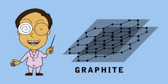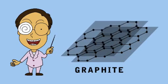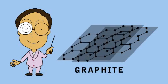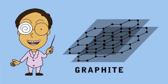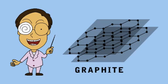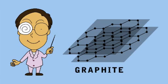These sheets can slip relative to each other, and spare valence electrons can travel throughout a plane, which explains the softness and electrical conductivity of graphite.